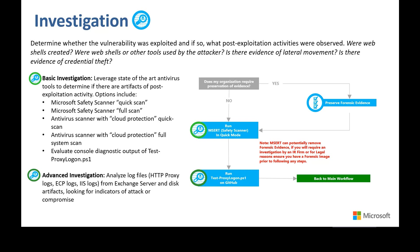These indicators can be anything from LSASS being dumped for credentials in memory, dropping of coin mining software, creating local user accounts on the Exchange systems, and other administrative tasks that can typically be performed. To help with this investigation phase, we have a high-level diagram of what the indicators of attack or indicators of compromise look like.